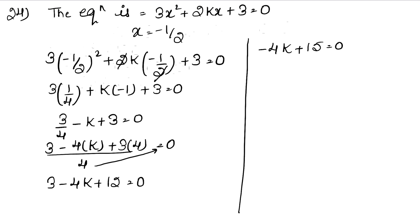Now, 15 is going down here, so how much is it? Minus 4k is equal to minus 15, minus minus cancel, so k value is how much? 15 upon 4 is the answer.